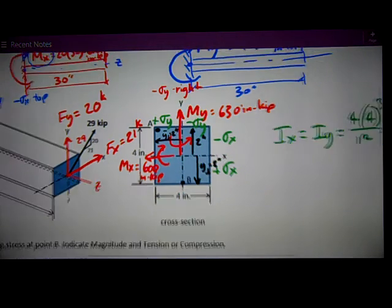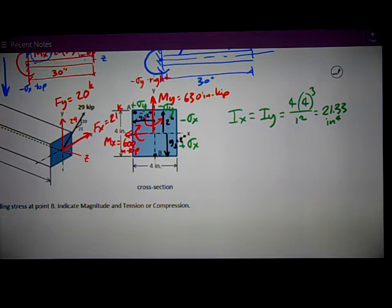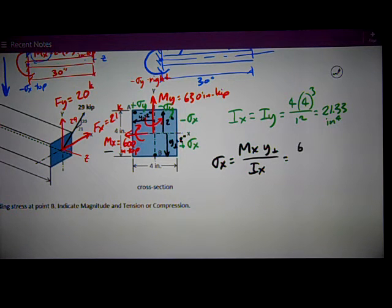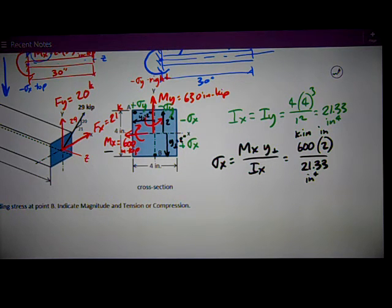Now I've got all the input I need. Sigma X equals MX times that perpendicular distance divided by IX. The numbers are MX is 600 times 2 inches perpendicular distance divided by 21.33. My units are kip inches on the top times inches divided by inches to the fourth. So I get kips per square inch. The number works out to be 56.25, units are kips per square inch, KSI.